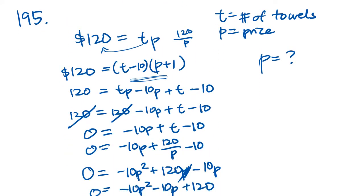Going back to this original equation, we know that P stands for a price. So P can't be a negative price, you're not going to pay people to take your towels. So 3 is going to be the correct answer, and 3 is answer C.